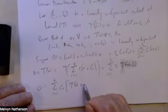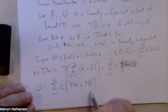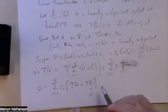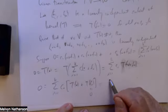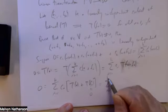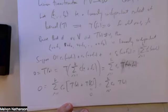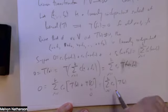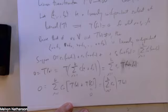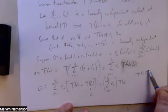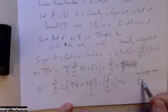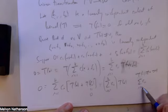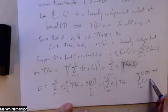T of all these F sub i's are zero. So this is the summation of C sub i from i equals one to K, times the vector T of V. And T of V is different from zero, but this whole sum is just some scalar times T of V. Since T of V is not zero, the sum of all of these coefficients from i equals 0 to k must equal zero.